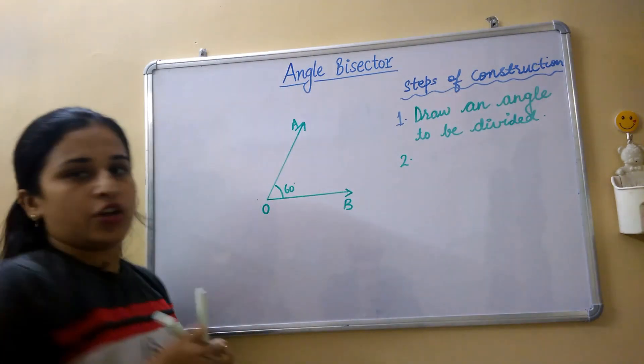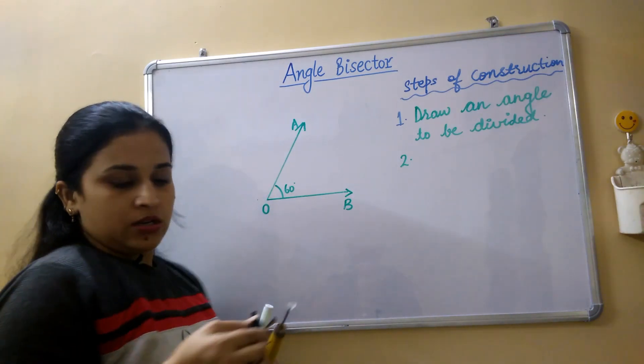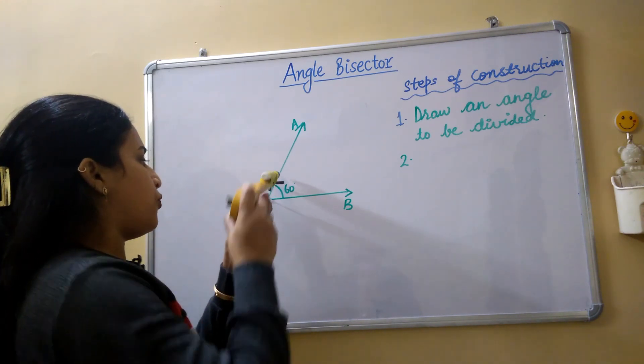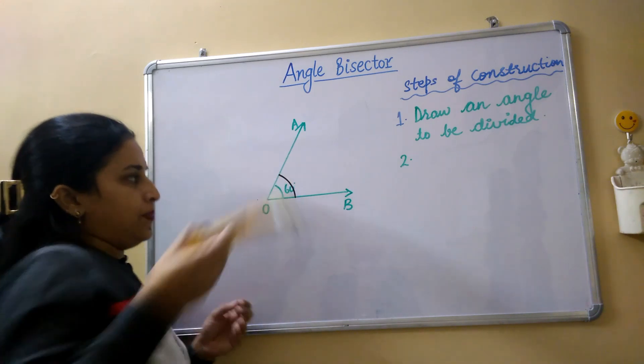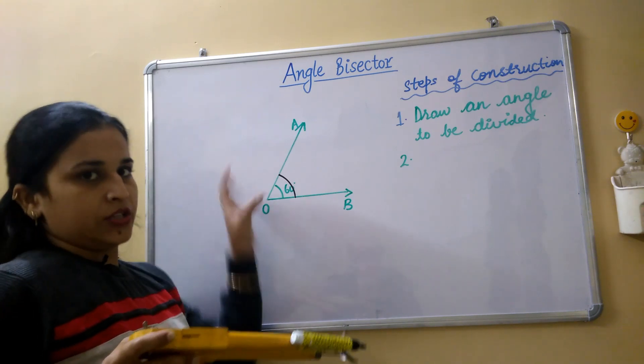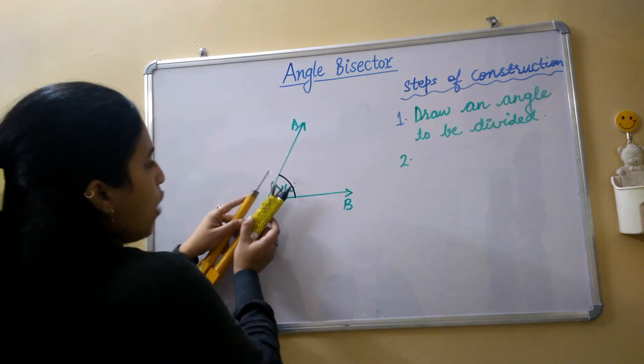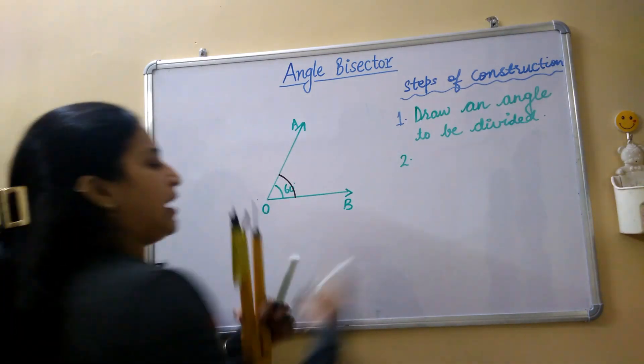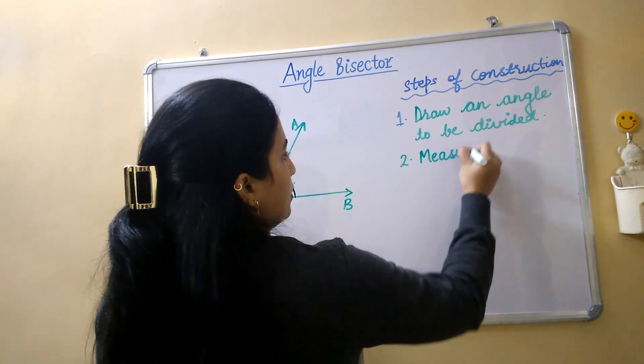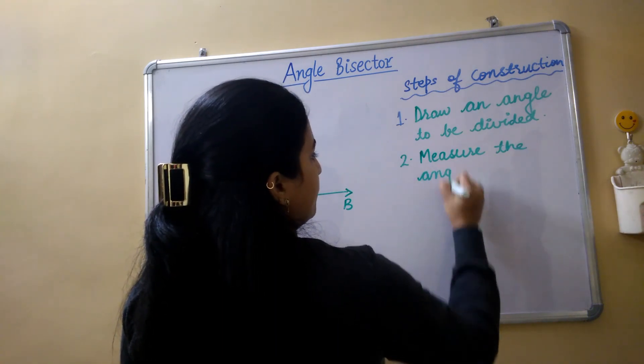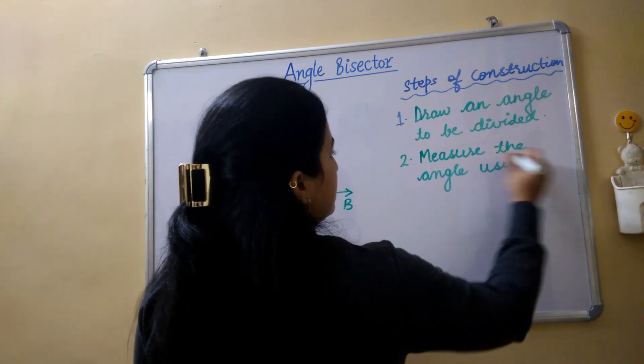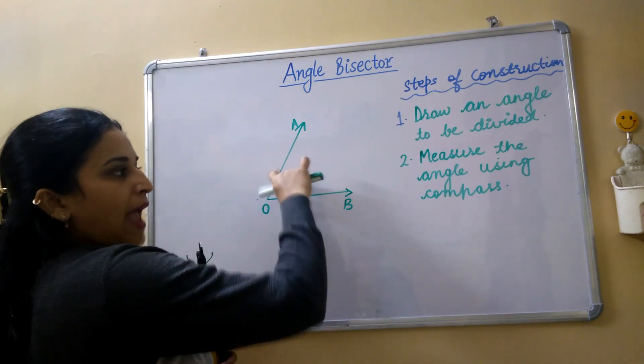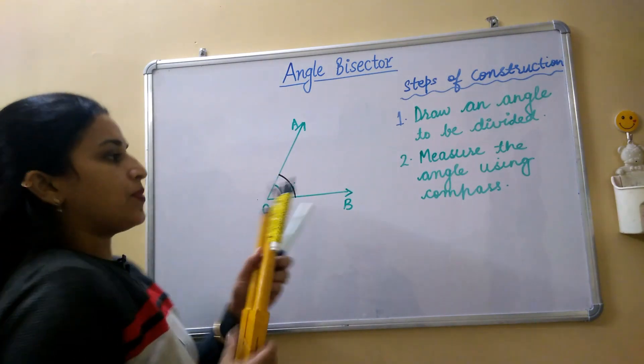Then second step of construction would be we have to measure the angle which we have drawn. So how do we measure? I will give a full arc from this point to this point. First of all give arc to this point, to this point, both of the rays. Then measure the angle. How would we measure the angle? From this point and this is the second point. So second step of construction would be measure the angle using compass.